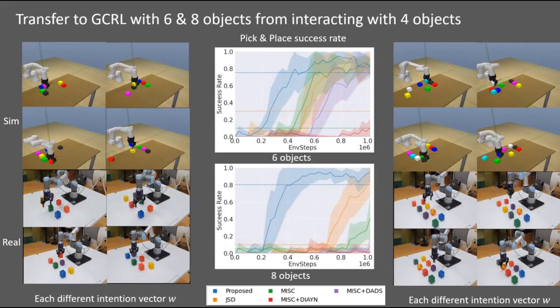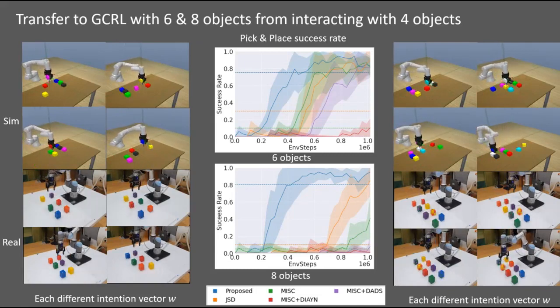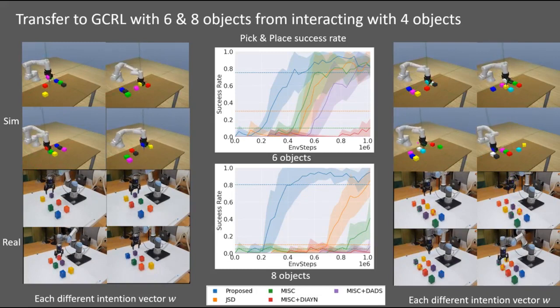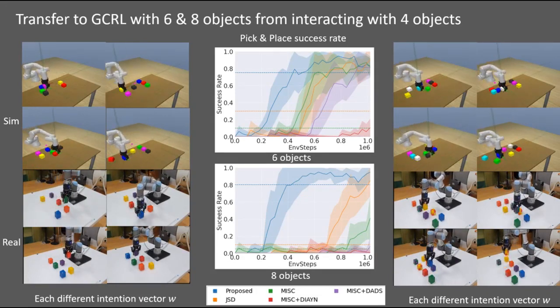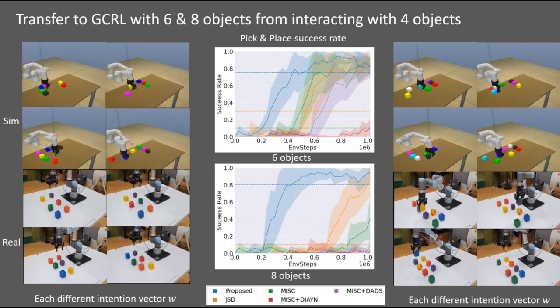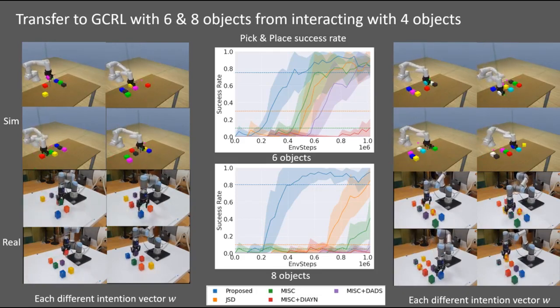As the encoded feature is used in multiple object settings, we could further transfer the primitives learned with four objects to the six and eight object settings without any modification on the network structure. Across one to eight object cases, only the proposed method is insensitive to the number of objects.